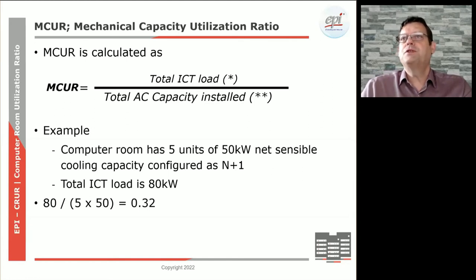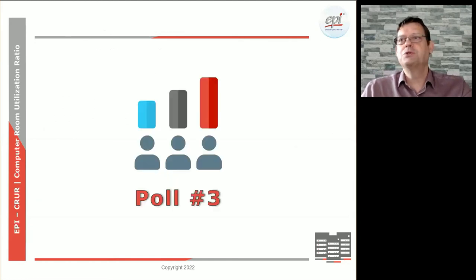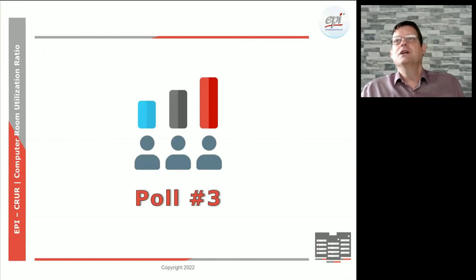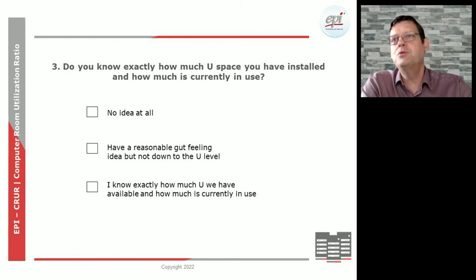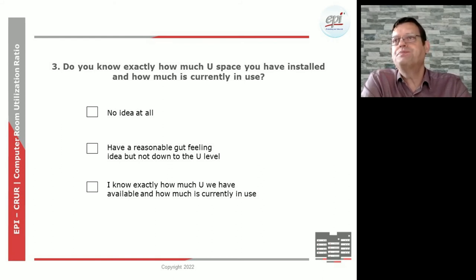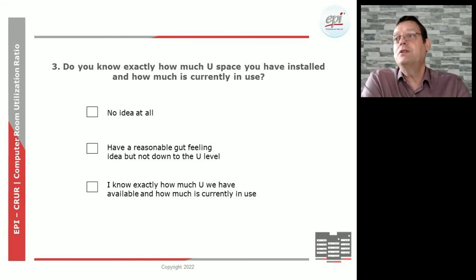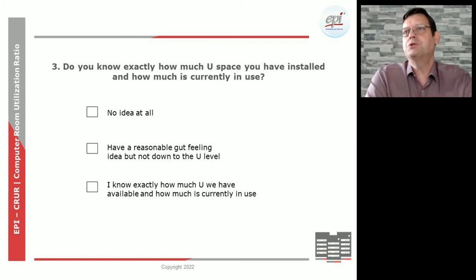Let's go to the third poll question — the last one — addressing the last portion of the CRUR facility calculation. The question is: do you know exactly how much U space you have installed in your computer room? A rack is typically 42U or 48U. The question is: how much do you have installed, and do you know exactly how much is currently in use?